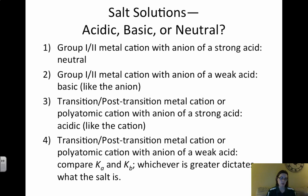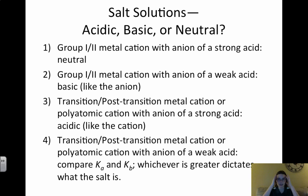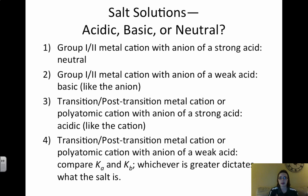To summarize: salt solutions can be acidic, basic, or neutral. If you have a group 1 or 2 cation from a strong base paired with the anion of a strong acid, both conjugates are neutral and the salt is neutral. If you have a cation from a strong base paired with the anion of a weak acid, the cation is neutral and the anion is a weak conjugate base, so the salt is basic. Always think about conjugates as you work through these cases.